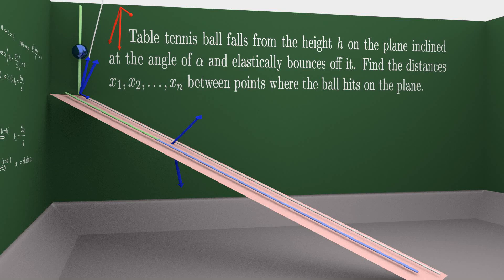A table tennis ball falls from height h onto a plane inclined at angle alpha and elastically bounces off it. Find the distances x1, x2, xn between the points where the ball hits the plane.